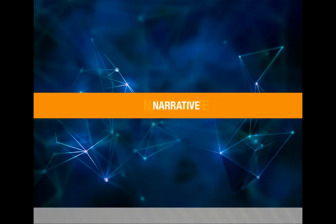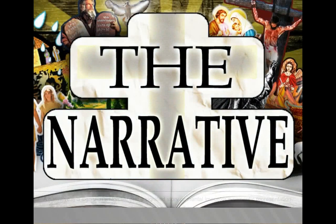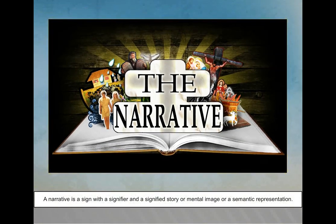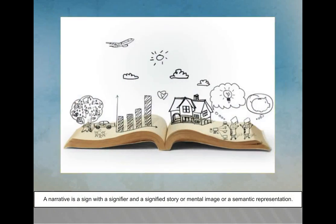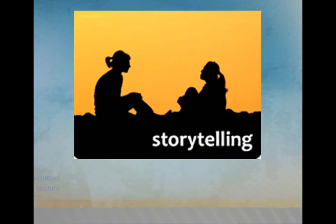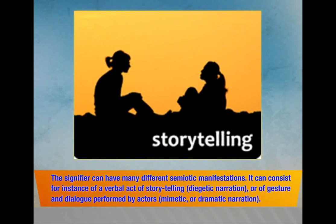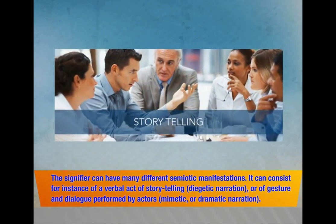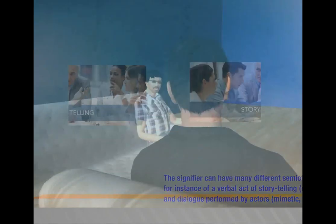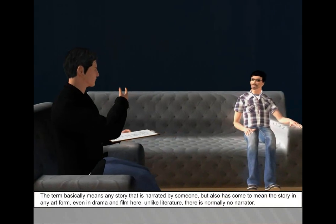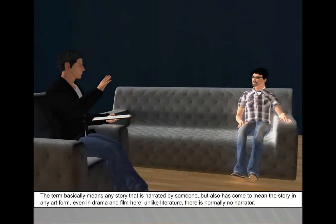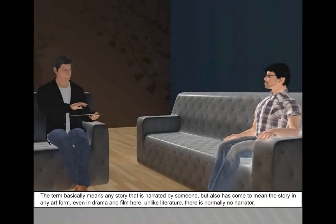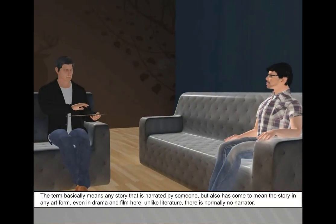A narrative is assigned with a signifier and signified — a story, mental image, or semantic representation. The signifier can have many different semiotic manifestations: a verbal act of storytelling or diegetic narration, or gesture and dialogue performed by actors — mimetic or dramatic narration. The term basically means any story narrated by someone, but has also come to mean the story in any art form, including drama and film — where, unlike literature, there is normally no narrator.